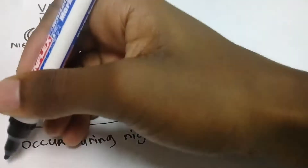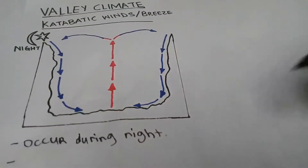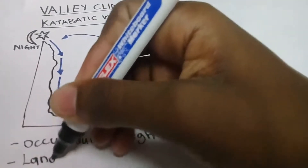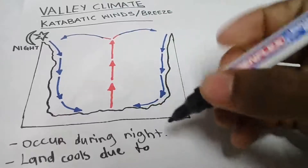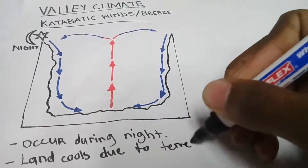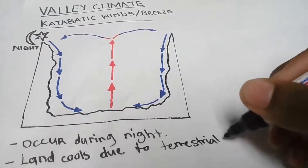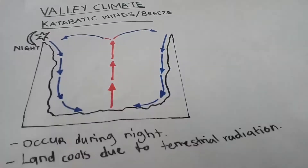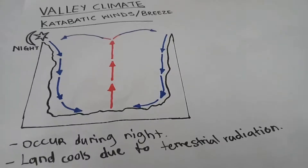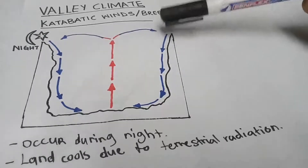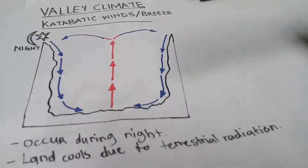To write that point down for you: land cools due to terrestrial radiation. This occurs during the night.